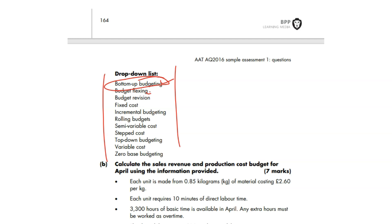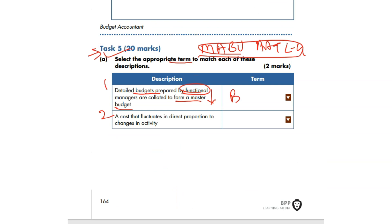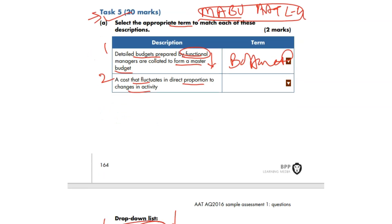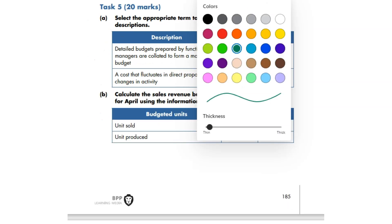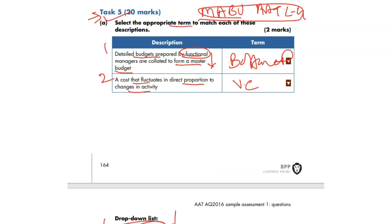Looking at the other options: flexing, no; revision, fixed, incremental, no; rolling, semi-variable, stepped, top-down, no; variable cost, zero, no. So the better answer here is bottom-up budgeting. Number two: 'A cost that fluctuates in direct proportion to changes in the level of activity.' This is variable cost, isn't it? You can see the answers from the back of the book: bottom-up, variable cost. Well done.